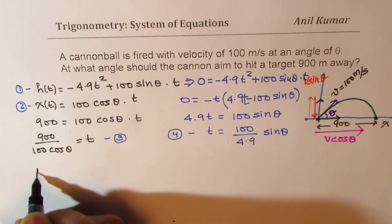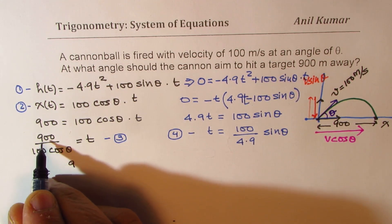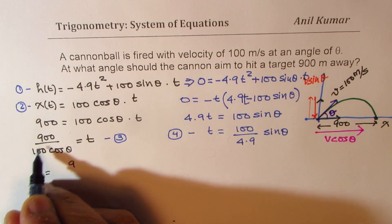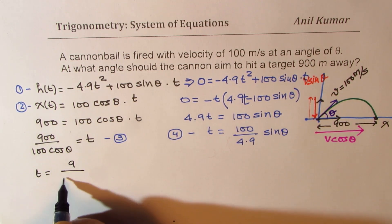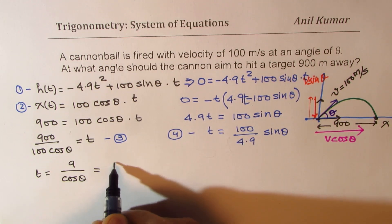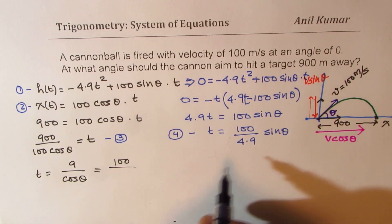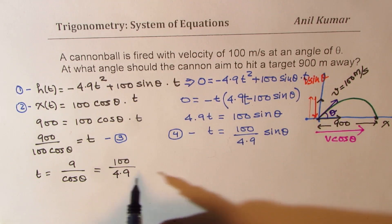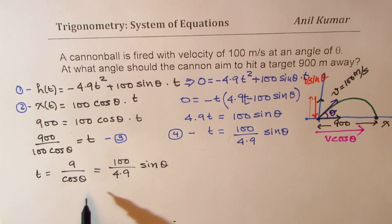So we know that t is basically equal to 9... 100, when divided into 9, you get 9, divided by cos theta and that should be equal to 100 divided by 4.9 sin theta, right?